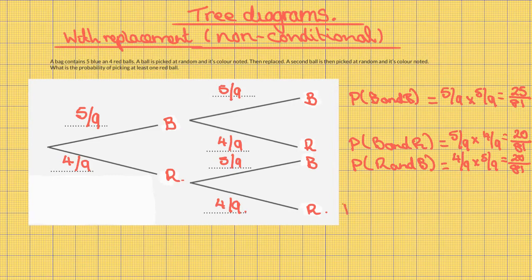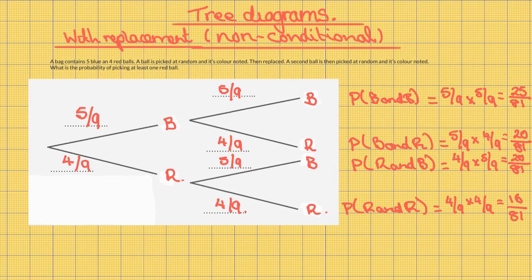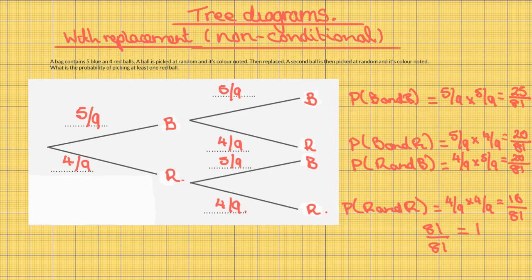The probability of red and red is four out of nine times four out of nine, which equals 16 out of 81. All of the probabilities add up to 1 — 81 out of 81, which equals 1. This is because one of those events is definitely going to happen.